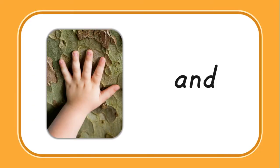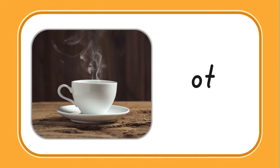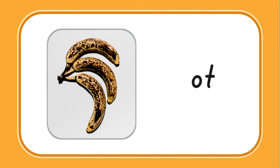Here we see a picture — something from the -and family. What is this child using to make a print in the sand? Hand! Very good. So what letter do we need to add to the -and family? H. Hand — there we have it. Try this one: I don't like to drink my tea cold or warm, I like to drink it... Hot! Hot is in the -ot family. Good. When food goes bad, you know what that is, Polly? Rot! Very good. Rot is the word — that's when food goes bad.